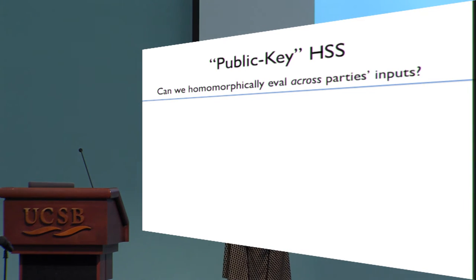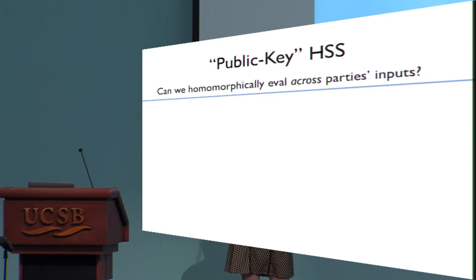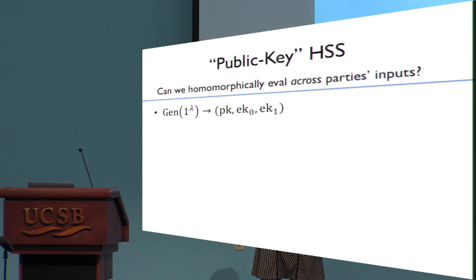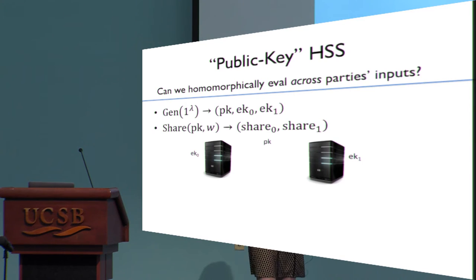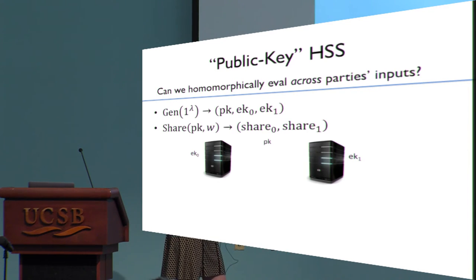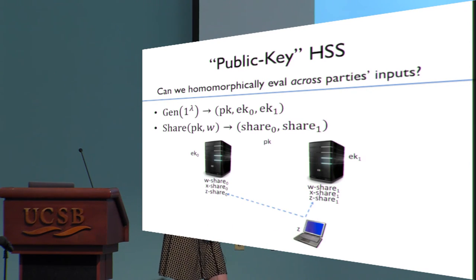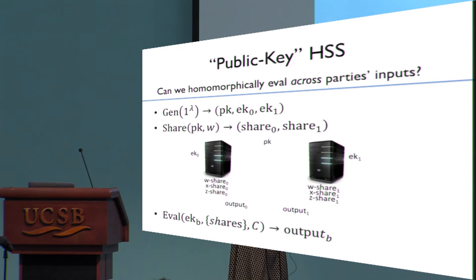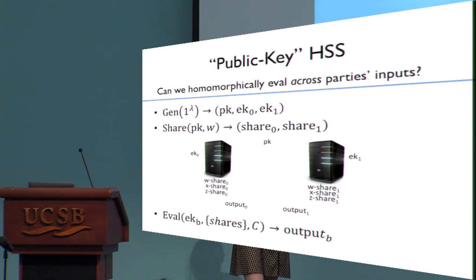As described, this secret sharing scheme is individual for each person — to generate shares of my input, I generate my own ElGamal secret key and do things with respect to that key. The question is whether you can get homomorphic computation across different parties' inputs. We can construct a public key version with a shared public key and separate evaluation keys, such that any party can use this public key to share his input so that servers can later compute across the different shares.